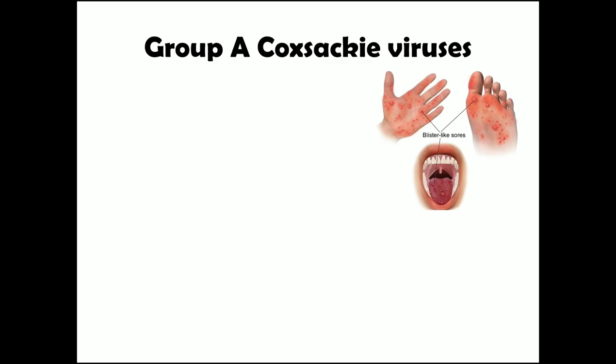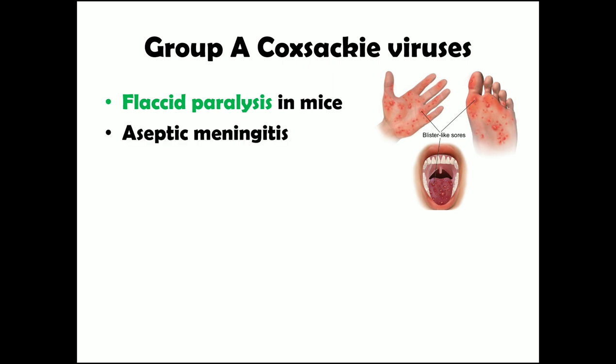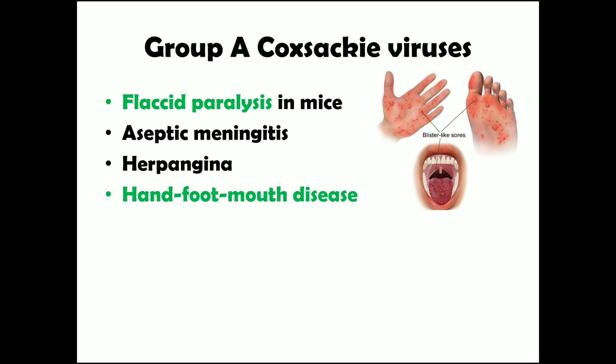Group A Coxsackieviruses, when injected intracerebrally into mice, produce flaccid paralysis. In humans, certain serotypes can cause aseptic meningitis. They can also cause herpangina, in which there are vesicle-like blisters in the oral cavity and pharynx. Importantly, Group A Coxsackieviruses cause hand, foot, and mouth disease, with vesicle-like blisters over the palms, feet, and oral cavity. They can also cause acute hemorrhagic conjunctivitis, with congestion and bluish discoloration of the conjunctiva.